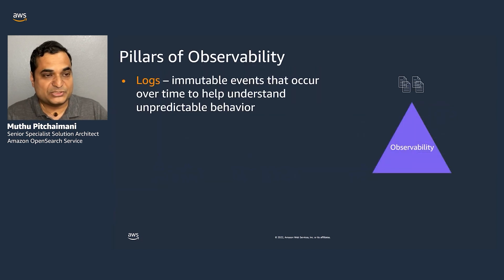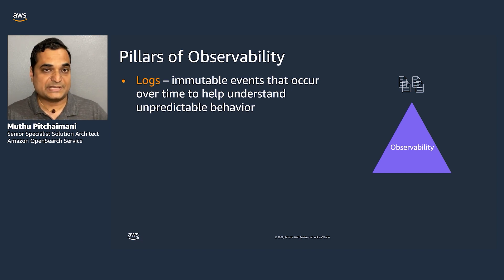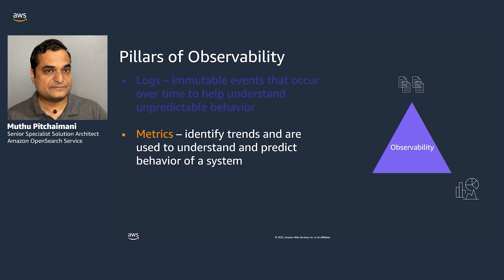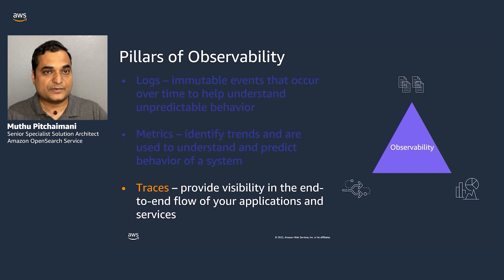What data can you collect from a system to understand its internal state? The first is logs — time series events that give you insight into what is happening in the system, from your applications, infrastructure, or other parts. Next is metrics, which provide a numerical measurement of your system state or resource utilization. Finally, trace data allows you to track a request as it enters your complex system, travels through it, and returns after being serviced — that's the last component of observability.